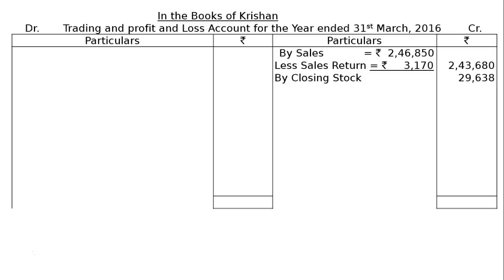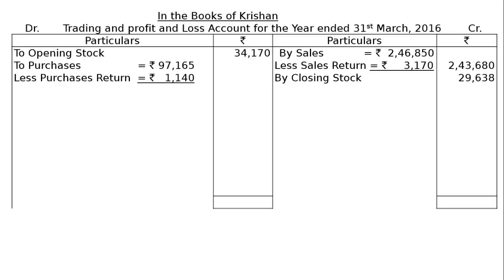All adjustments are recorded twice — either in trading account, profit and loss, or balance sheet. Next is opening stock Rs. 34,170. Then to purchases Rs. 97,165, less purchases return Rs. 1,140. After deducting this we get Rs. 96,025. Then to manufacturing wages Rs. 34,965.